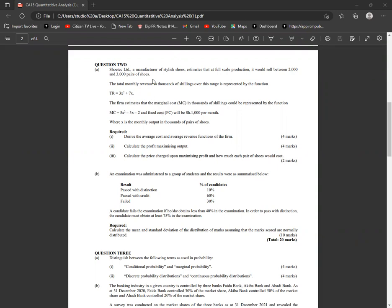Question number two reads: Shoe Tech Limited, a manufacturer of stylish shoes, estimates that at full-scale production it would sell between 2,000 and 3,000 pairs of shoes. The total monthly revenue in thousands of shillings over this range is represented by the function total revenue equals 3x squared plus 7x.